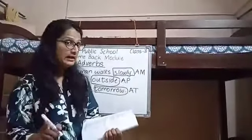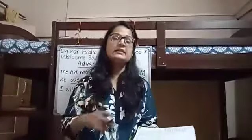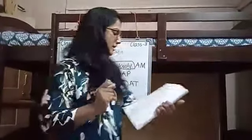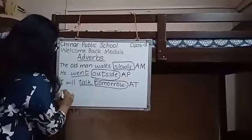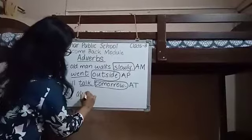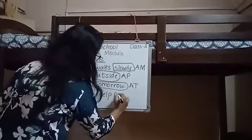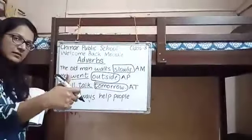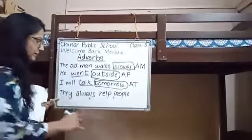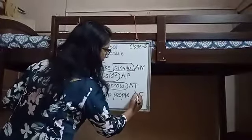Now comes the last type — adverb of frequency. It tells us how often or how frequently the action is done. For example: They always help people. How frequently are they helping? Always. So 'always' becomes the adverb of frequency.